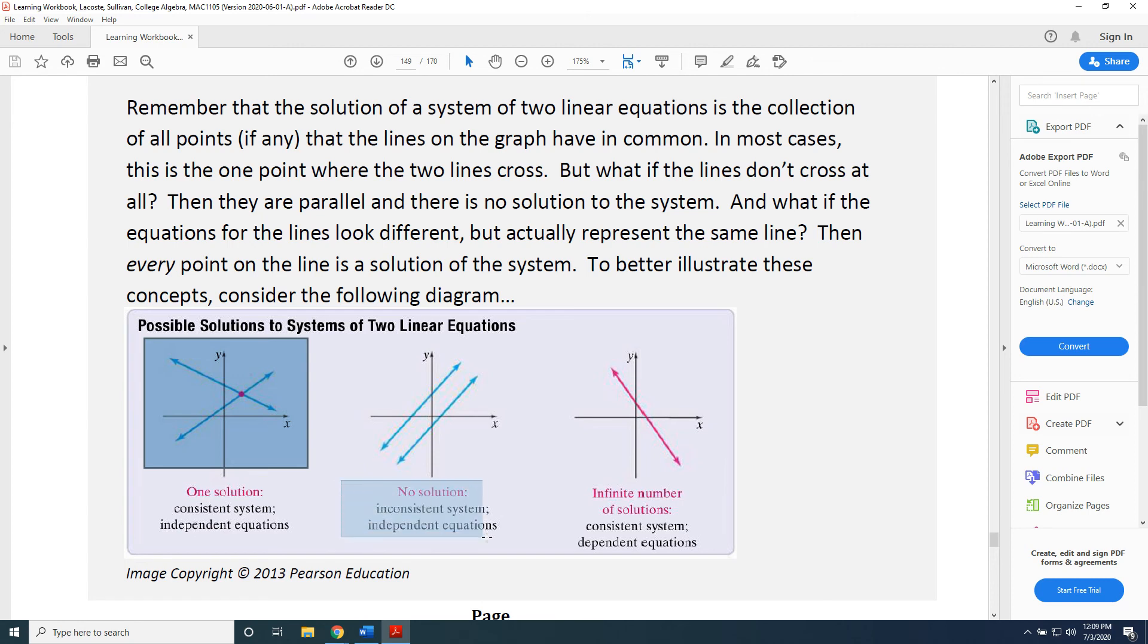However, if you've determined that there is no solution, which means you have an inconsistent system with independent equations, that tells you that you must be dealing with two lines that are parallel. They don't cross, that's why there's no solution.